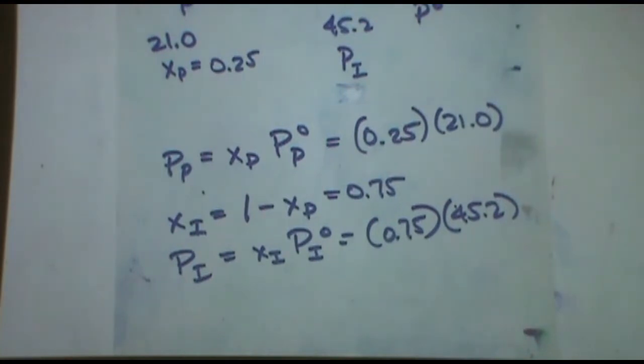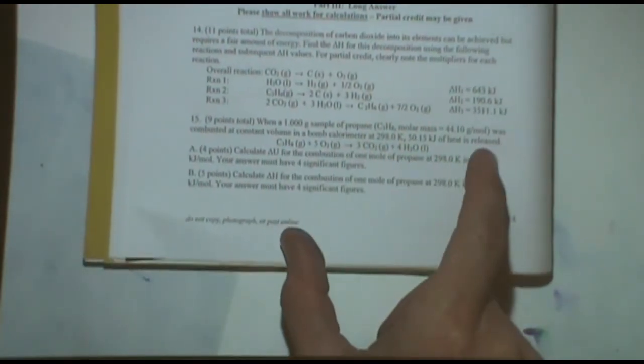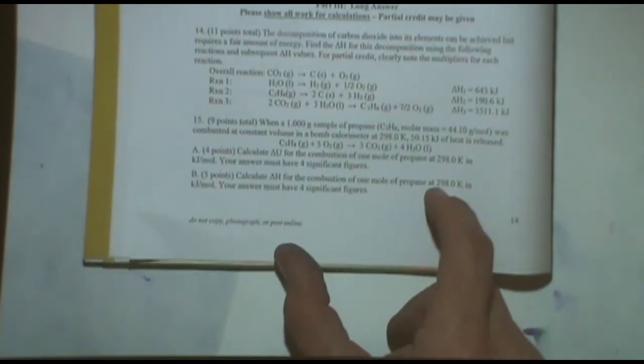Number two. Do you have a page number for me? Winter 2018, number 15A. This is page 14. We've got one gram combusted in a bomb calorimeter, that much heat is released. Calculate the delta U of combustion of one mole and then calculate the delta H. Just part A.